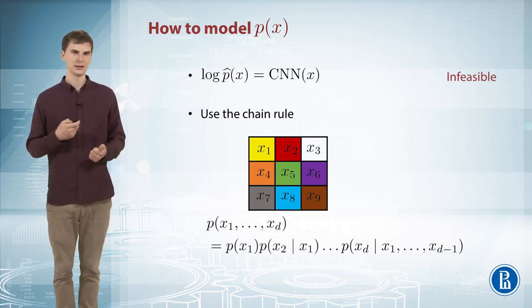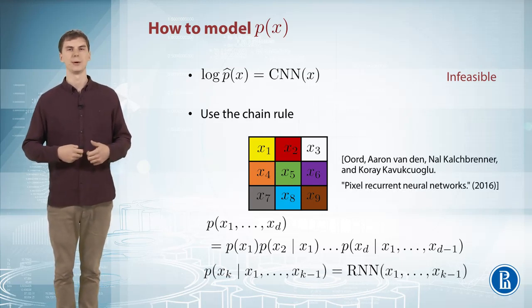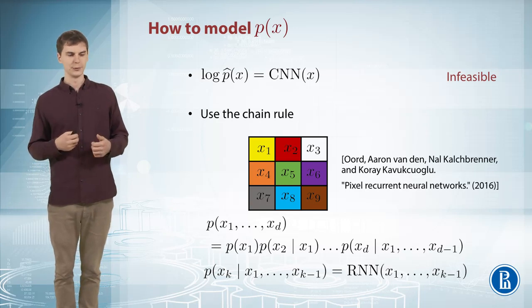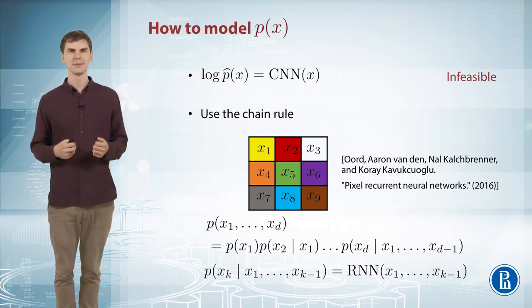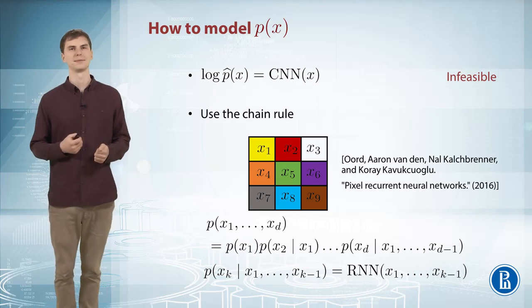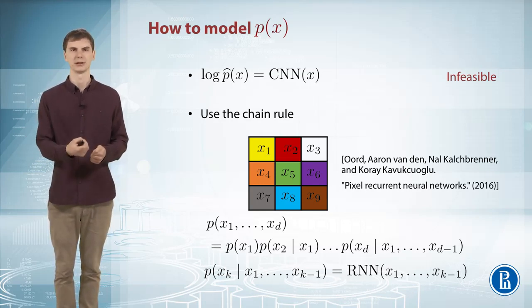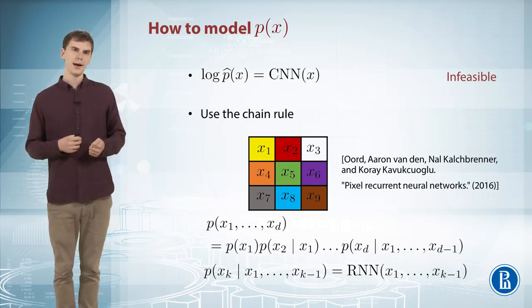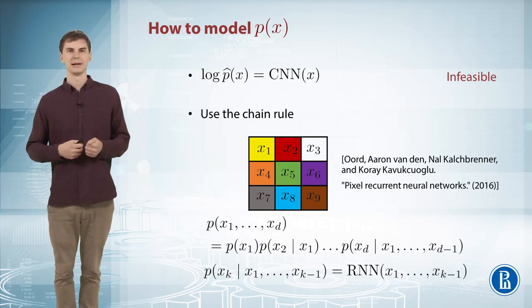The natural idea to represent these conditional probabilities is with a recurrent neural network, which will read your image pixel by pixel and output your prediction for the next pixel, the prediction for brightness of the next pixel, for example.